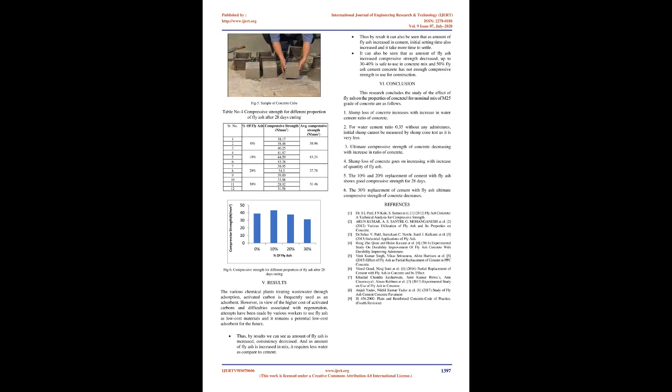(4) Slump loss of concrete goes on increasing with increase in quantity of fly ash. (5) The 10% and 20% replacement of cement with fly ash shows good compressive strength for 28 days. (6) The 30% replacement of cement with fly ash causes the ultimate compressive strength of concrete to decrease.